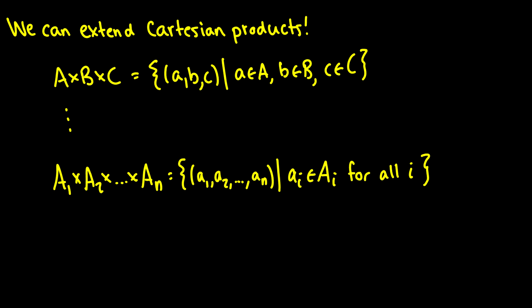Of course, why have just ordered pairs? Why not have ordered triplets and ordered quadruplets and ordered n-tuples? So here we have an n-tuple, and this would be a set of n-tuples. What this means is that if we have A cross B cross C, then we just have an ordered triplet where the first one comes from A, the second one from B, and the third one from C. And that's what this notation means.